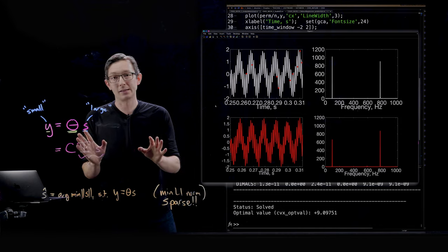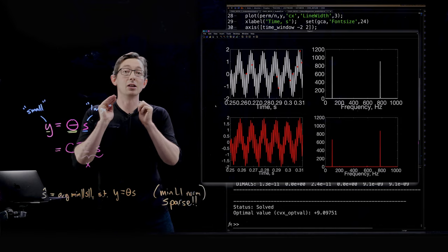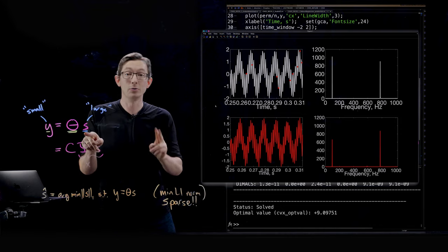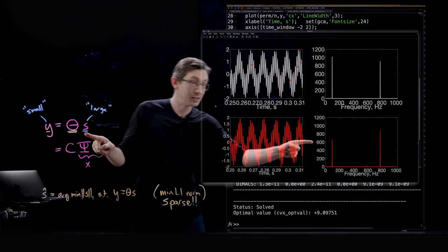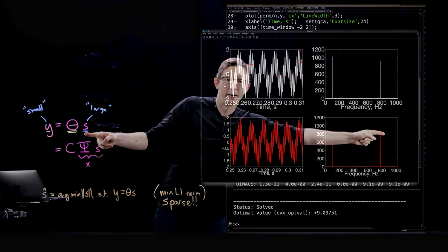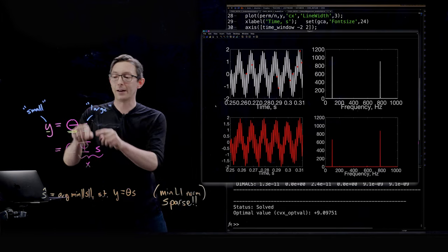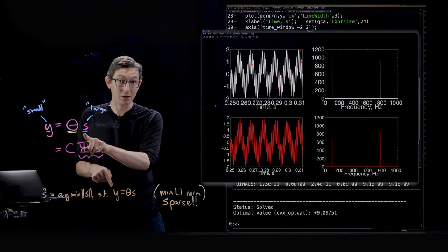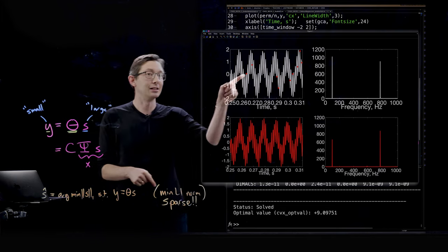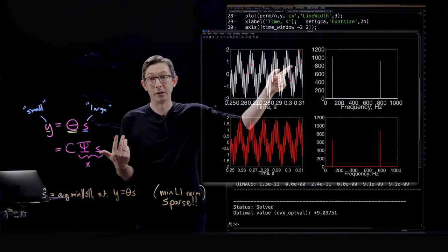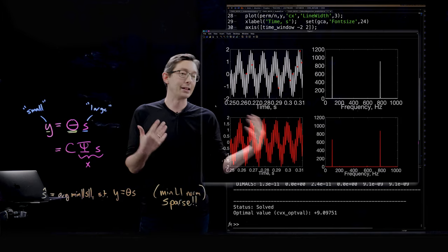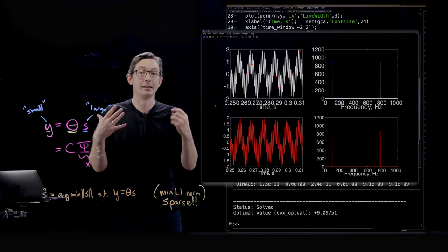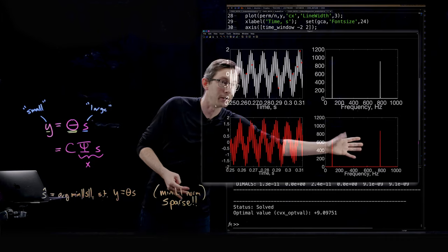Now this example works because my vector S is ultra ultra sparse. It is too sparse. It has two non-zero entries at these two frequencies here. So it's really easy to find a very very sparse solution S that's consistent with those 128 random points in red. And that's also why this CoSAMP runs quickly and is accurate and gets me the sparse solution.